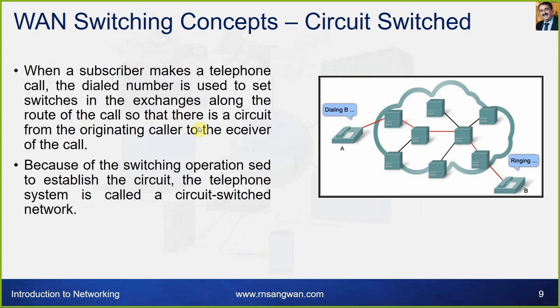In circuit switching, when a subscriber makes a telephone call, the dialed number is used to set switches in the exchanges along the route of the call, establishing a circuit from the originating caller to the receiver. Because of these switching operations needed to establish the circuit, the telephone system is called a circuit switched network.